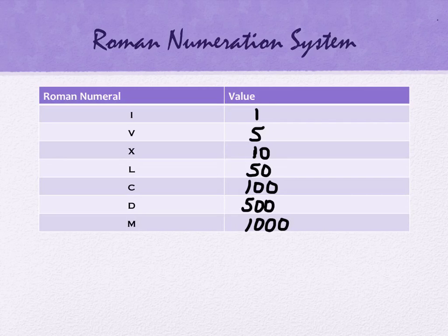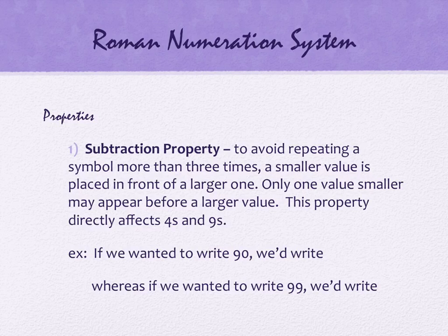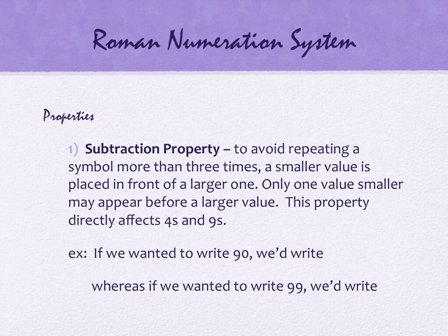Let's talk about the Romans because they had some interesting things. One of the things they did looked a little like the Babylonians — they did repeat some symbols. If you wanted the number three, you did three I's. But they didn't do that all the time. They had something called a subtraction property: to avoid repeating a symbol more than three times, a smaller value is placed in front of a larger one. But it's only the one that comes directly before it in the table — you can't put just any smaller numeral before a larger one. This property only affects numbers that have four or nine in them.